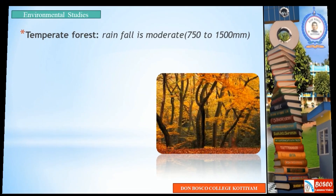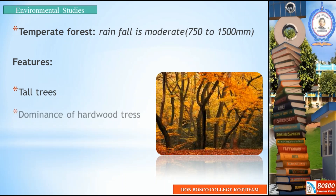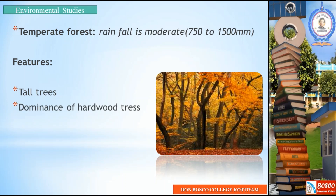The third type is Temperate Forest. Rainfall is moderate — comparatively, rainfall is a little less than a tropical forest. The features are tall trees, dominance of hardwood trees, and abundance of insects and birds.